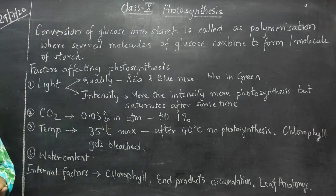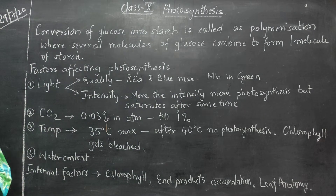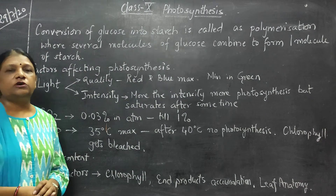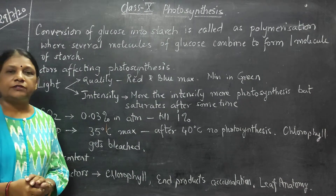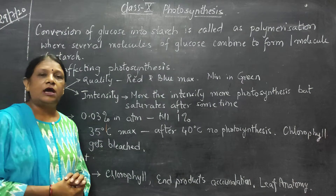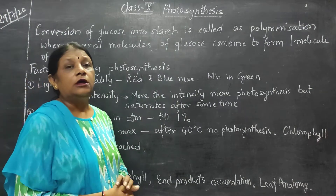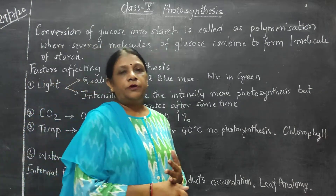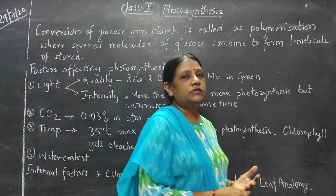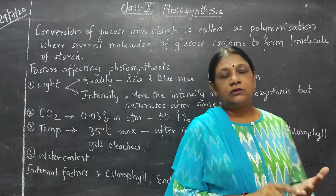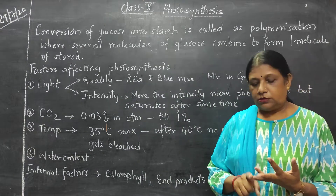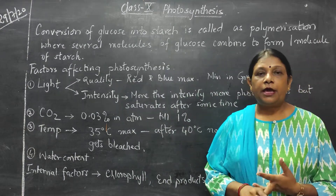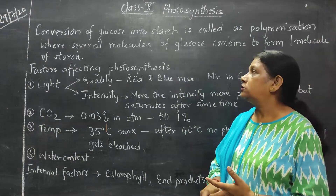Now we are going to study about the end products of photosynthesis, as we have done in the last picture. The end products of photosynthesis are starch or glucose, water and oxygen.